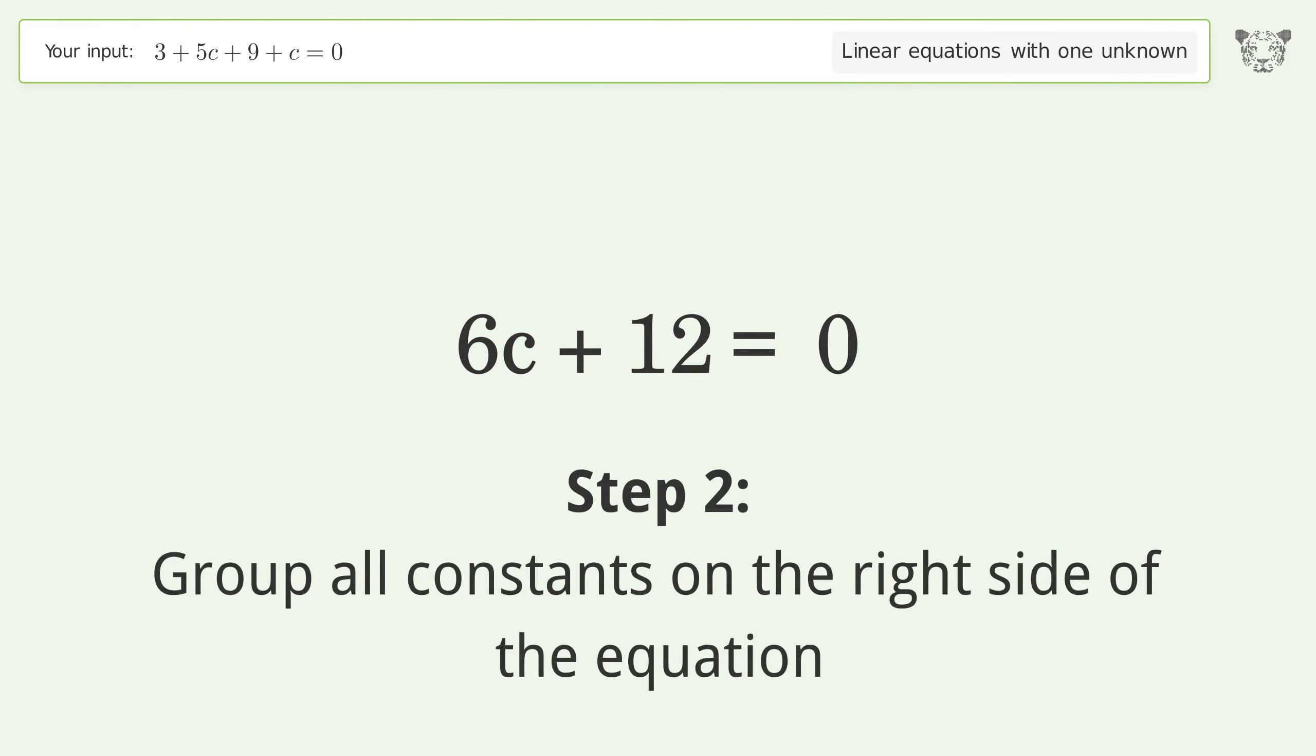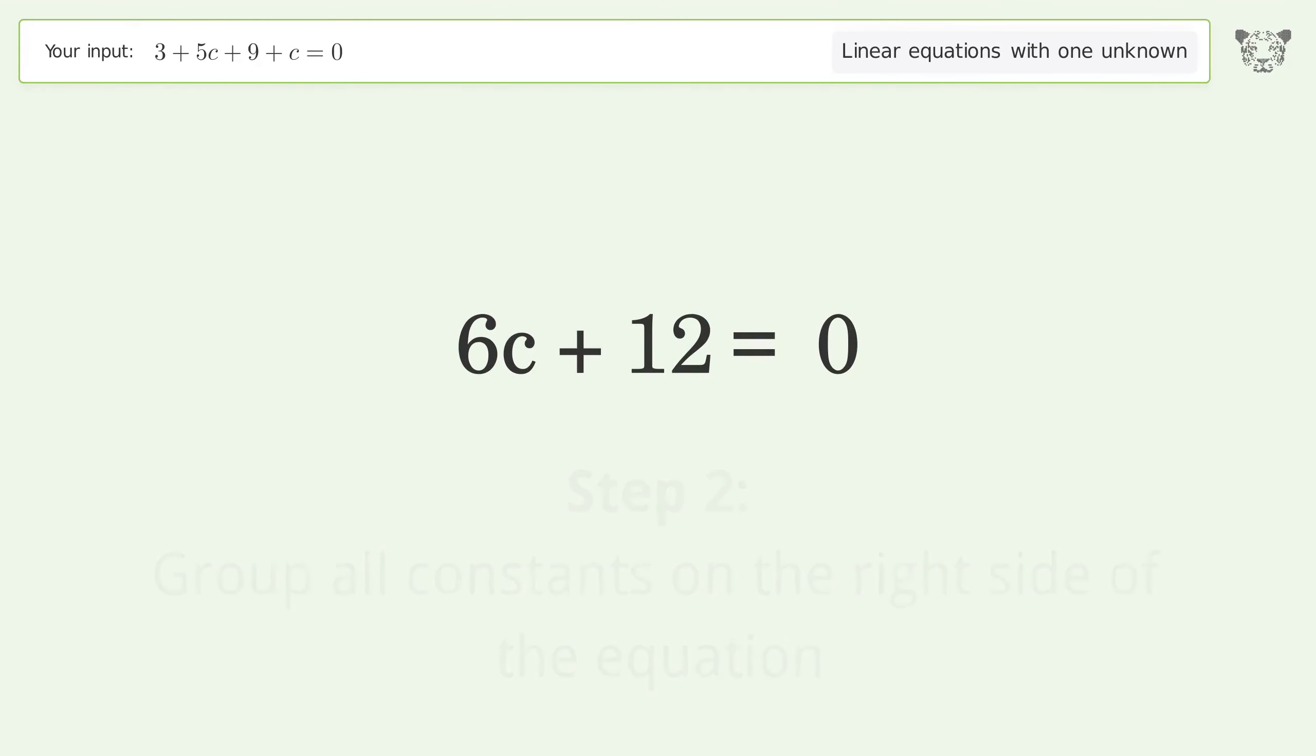Group all constants on the right side of the equation. Subtract 12 from both sides. Simplify the arithmetic.